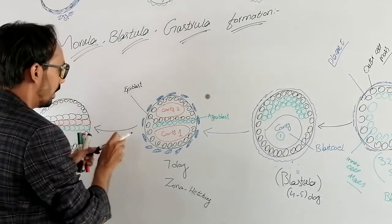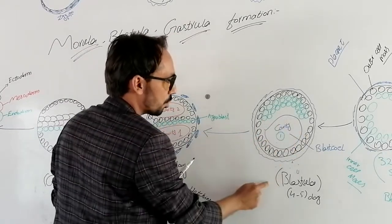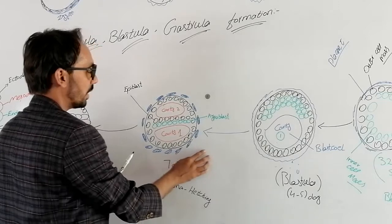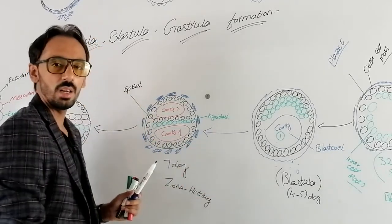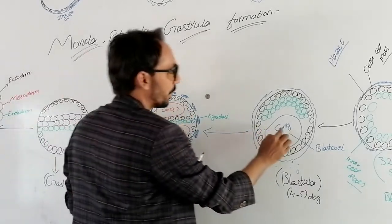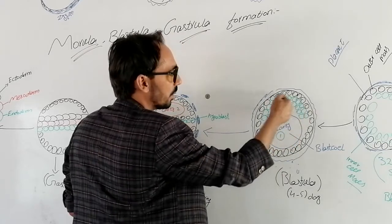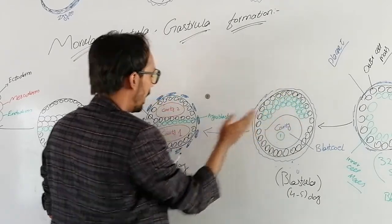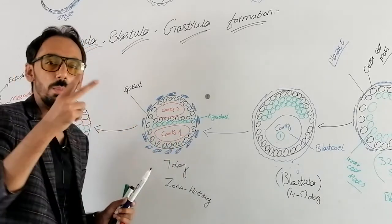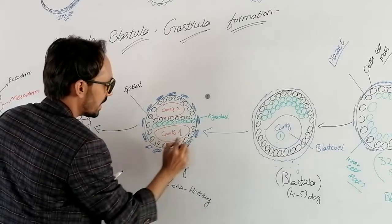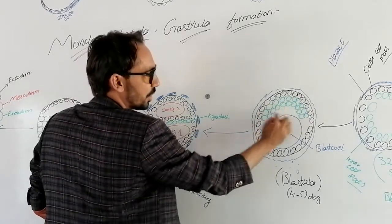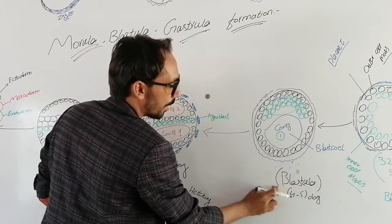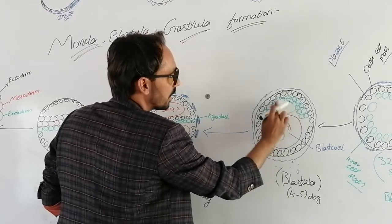So we have made a single cavity, cavity number 1, called the blastocoele, at the blastula stage. Proceeding further, another cavity will appear. You can see cavity number 1 is here, and the cells have gathered to one side. Now these cells will move toward the center, and a cavity number 2 will form in that region. Cavity number 1 is the blastocoele, and cavity number 2 is now beginning to form.